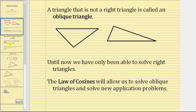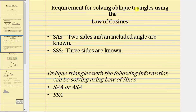In order to apply the law of cosines, we must be given either side-angle-side, meaning two sides and an included angle are known, or side-side-side, meaning all three sides are known. Oblique triangles with the following information can be solved using the law of sines: side-angle-angle, or angle-side-angle, as well as side-side-angle.